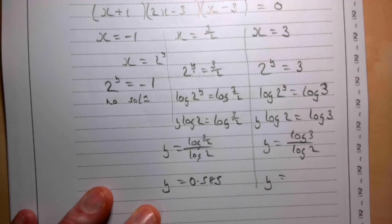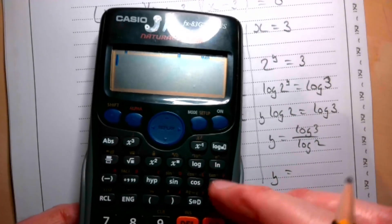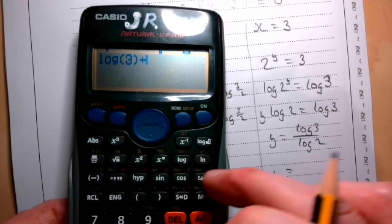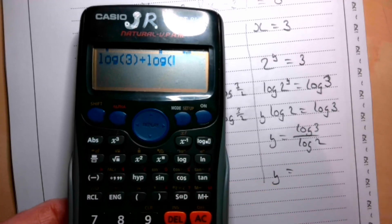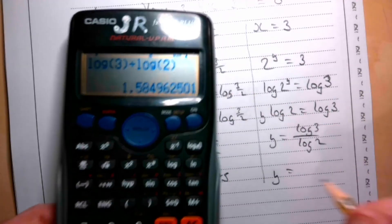Again, substitute that into your calculator. So we're going to do log(3) divided by log(2). Of course you can do it as a big fraction, that's fine. You get 1.58.